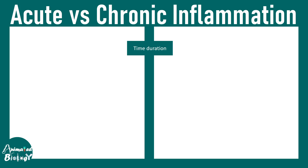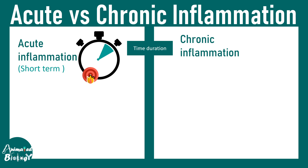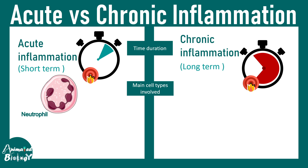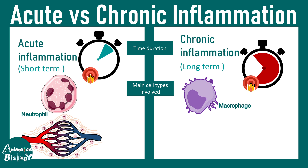In this video we would try to appreciate the difference between acute versus chronic inflammation. This is a high-yield video for USMLE Step 1. Acute inflammation is a short-term inflammation whereas chronic inflammation is a long-term persistent inflammation. The main inflammatory cell type in acute inflammation is the neutrophil, whereas it is macrophages in case of chronic inflammation.